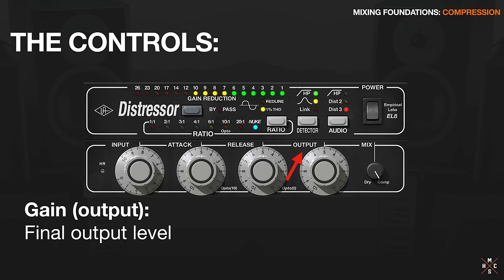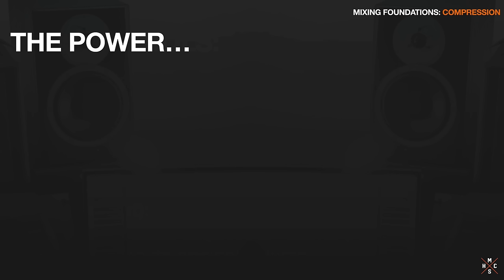Finally, we have the gain control or the output control on the compressor - also called makeup gain. This is just there because a compressor is turning the signal down, so sometimes you need to turn it back up at the end to get it back to the level you need in the mix or going into the next plugin. A compressor is just a level control and it's certainly very useful in controlling dynamics, making things more even and more audible. But this play between the ratio, the attack, and the release - this is where the magic is. It takes time and practice to really get a hold of. Let me illustrate a few ways that compressors become the most powerful sonic shaping tool in the mix.